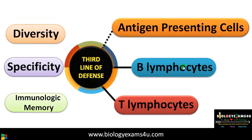The salient features of the third line of defense: the first one is diversity — it can respond to millions of antigens, antigenic determinants, or epitopes, and the specificity is absolute. Each antibody is directed specifically against an antigenic determinant or epitope. There is also immunologic memory, mediated by memory cells produced during the immune response. If the same pathogen comes a second time, memory cells will recognize it easily and clearance will be rapid and quick. These properties distinguish the third line of defense from the first and second lines.